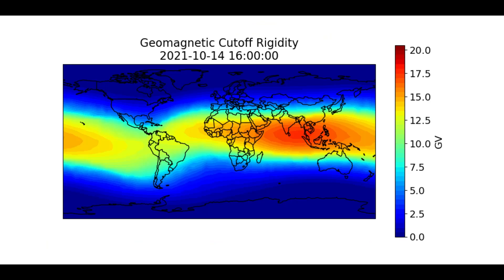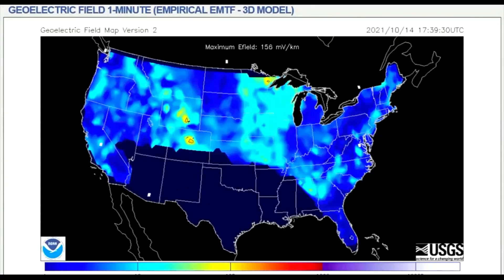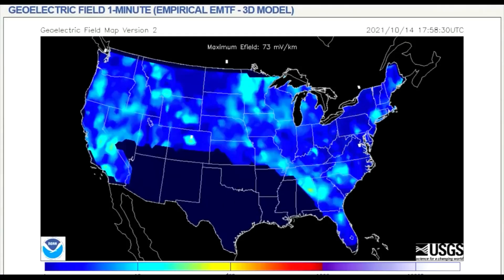Shown on this geomagnetic cutoff rigidity map, the transmission of charged particles are seen in concentrated areas close to the equator.